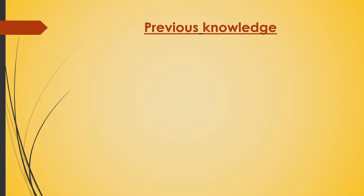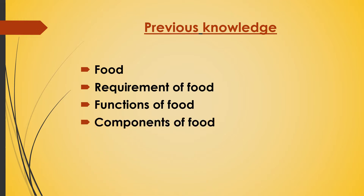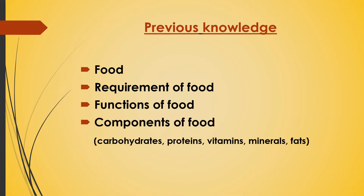You have already learnt in your previous class what is food — the substances which we eat to get energy. Why do we need food? To survive, to be alive. The functions of food: it gives us energy, it helps us to grow, it repairs our cells and tissues. You have also learnt components of food like carbohydrates, proteins, vitamins, minerals, fats, etc. in detail.